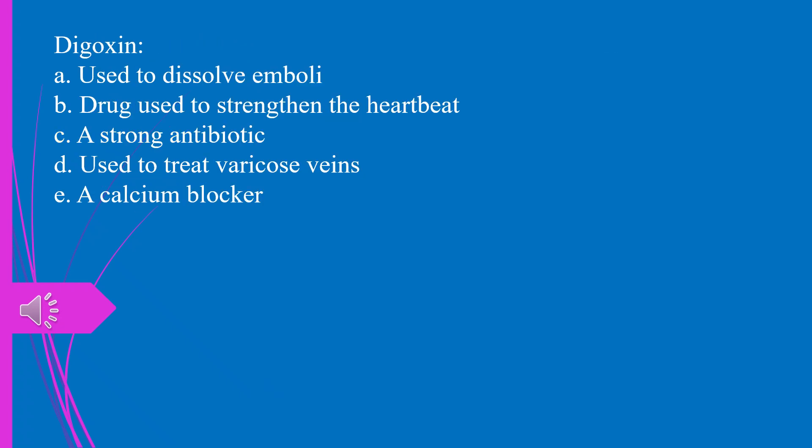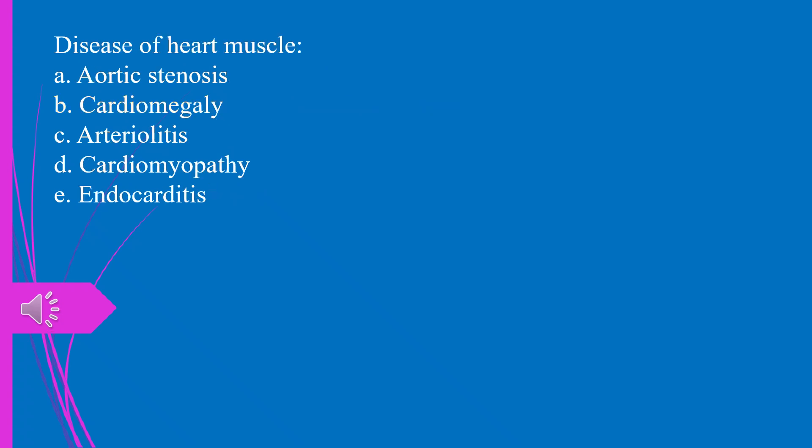Digoxin, A. Used to dissolve emboli. B. Drug used to strengthen the heartbeat. C. A strong antibiotic. D. Used to treat varicose veins. E. A calcium blocker. The answer is B. Drug used to strengthen the heartbeat.